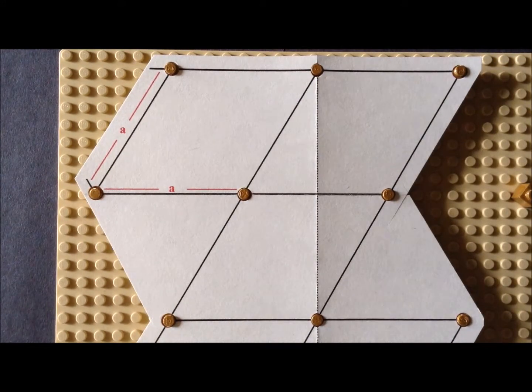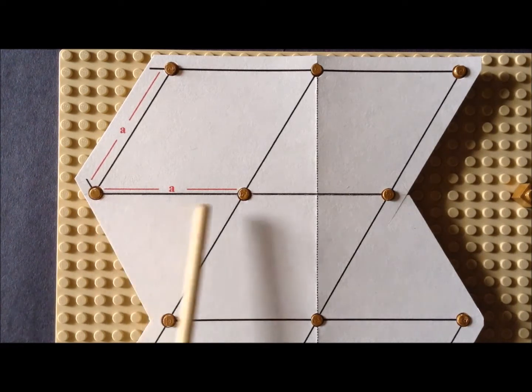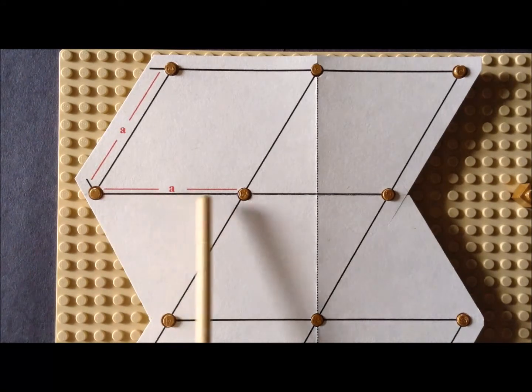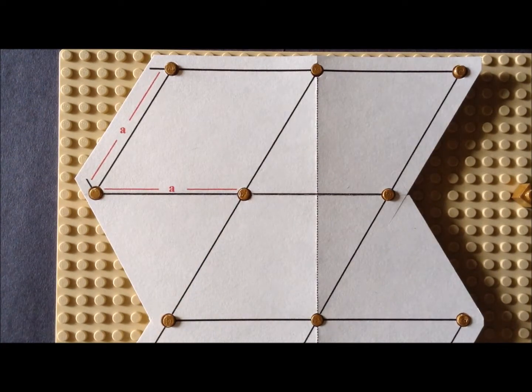Here is the same lattice, but now we're describing it with a rhombohedral unit cell, and we see that the length of each side of the rhombus is our parameter a.